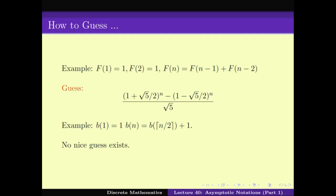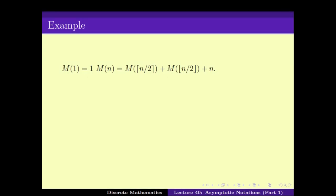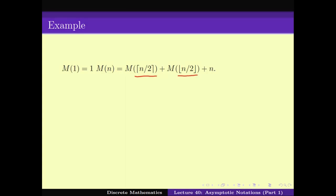Let's look at an example. Here is an example that occurs in the merge sort algorithm: M(1) = 1 and M(n) = M(⌈n/2⌉) + M(⌊n/2⌋) + n, where the first one is a ceiling and the second one is a floor. What does this ceiling mean? This means the smallest integer that is bigger than n/2 and this one is the largest integer that is less than n/2.